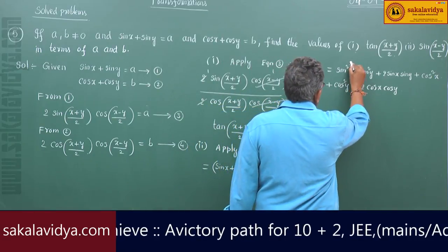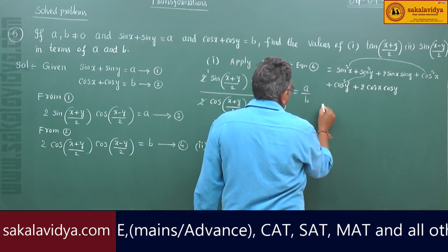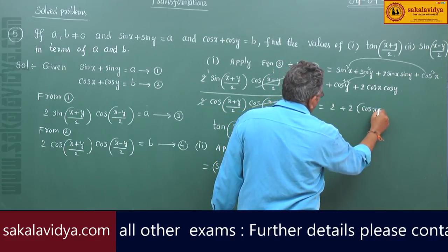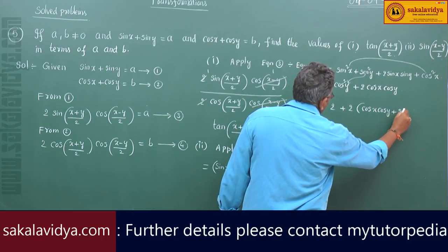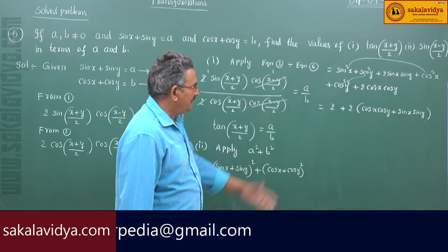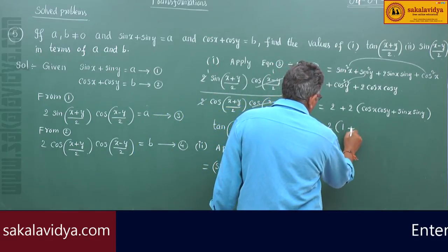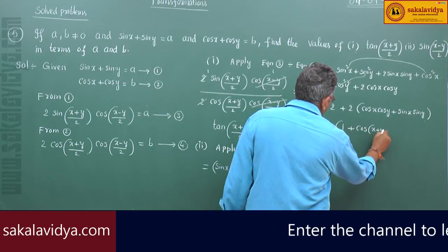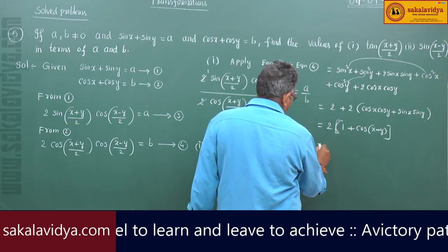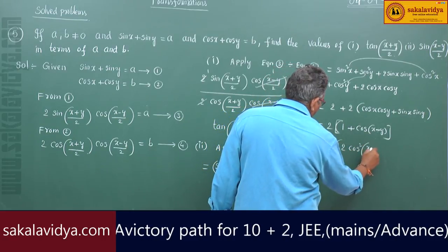Now, sin²x + cos²x = 1 and sin²y + cos²y = 1, so we get 2 plus 2(cos x cos y + sin x sin y). The expression cos x cos y + sin x sin y is nothing but cos(x − y). So we have 2 + 2 cos(x − y), which equals 2(1 + cos(x − y)), and using the double angle formula this is 4 cos²((x−y)/2).